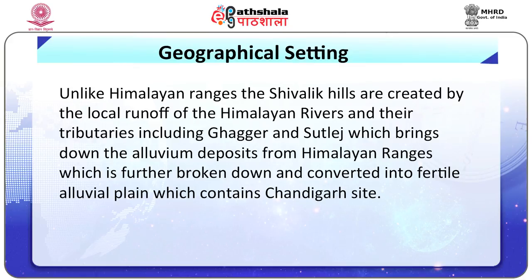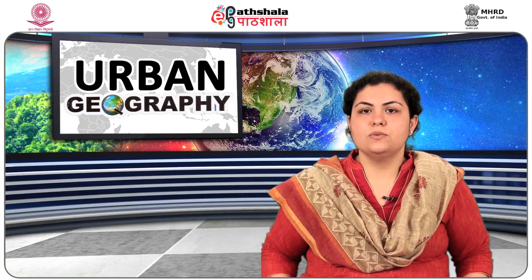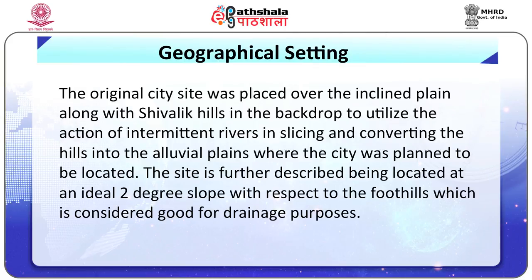Unlike the Himalayan ranges, the Shivalik hills are created by local runoff of Himalayan rivers and their tributaries including Ghaggar and Sutlej, which bring down alluvium deposits from the Himalayan ranges. These are further broken down and converted into the fertile alluvial plain which contains the Chandigarh site. The Himalayan mountain ranges end towards the north of Chandigarh, with the Ghaggar river draining across the plains to the east. It is beyond the Ghaggar river that the diminutive Shivalik hill ranges exist, providing peripheral edges to the city. The original city site was placed over the inclined plain along the Shivalik hills to utilize the action of intermittent rivers in slicing and converting the hills into alluvial plains.